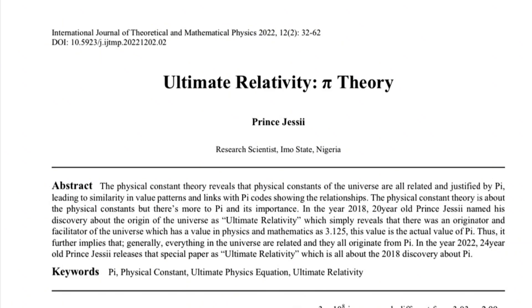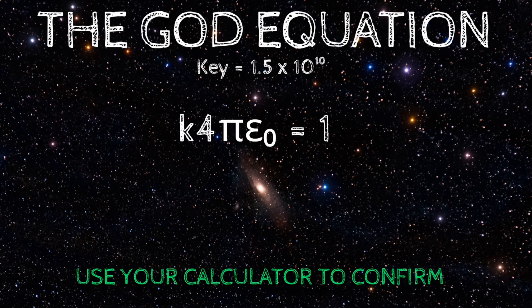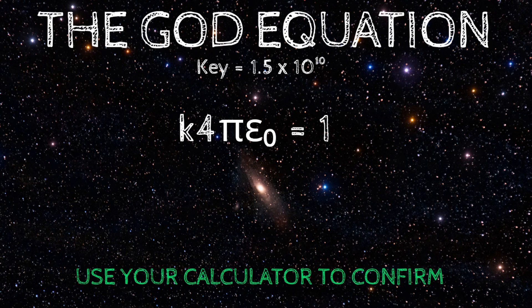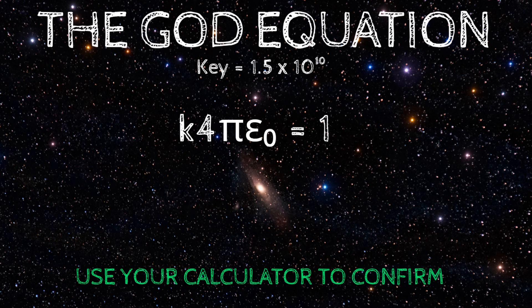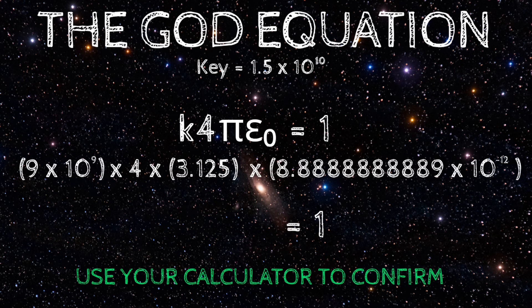Now, before you doubt these values from pi, we have to show you proof that these values are true and correct. If a formula as k4 pi times the electric constant is exactly 1, we should be able to combine the values and get a result as exactly 1. Let's see which is correct, CODATA or Prince Jesse. Use your calculator and confirm what you see on your screen. You see that Jesse is correct.